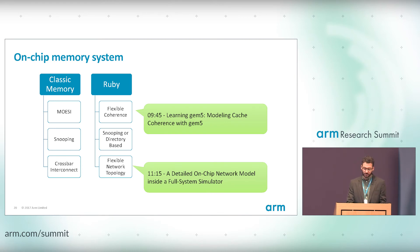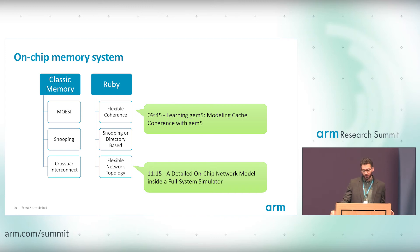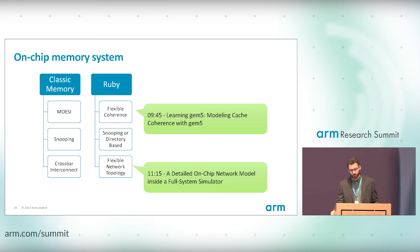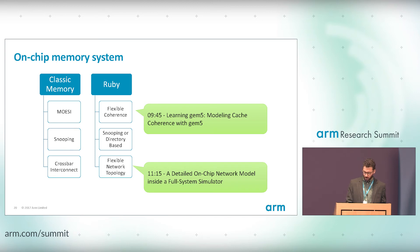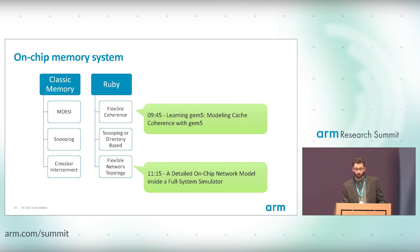The classic memory model is a fixed MOESI snooping coherence protocol that uses a crossbar as its interconnect. The Ruby memory system is much more elaborate, allowing flexible definition of coherence protocols and network topologies via a domain-specific language. gem5 currently supports a plethora of coherence protocols and it's easy to extend with your own. There's a talk by Jason at 9:45 on learning gem5 and modeling cache coherence, and at 11:15 on network-on-chip networks.